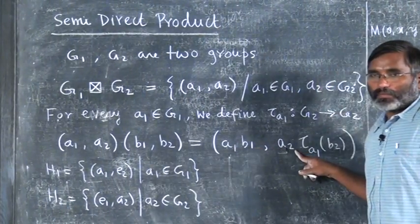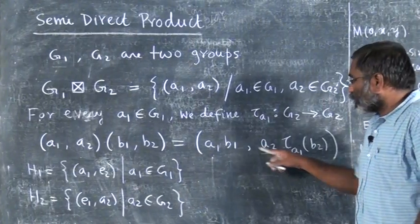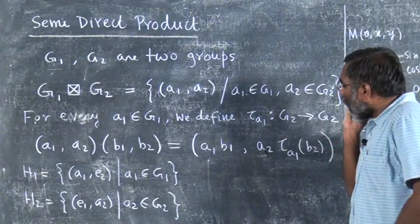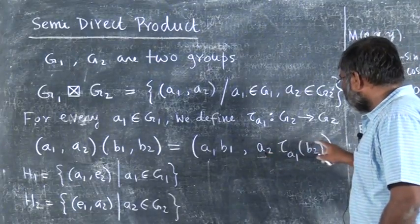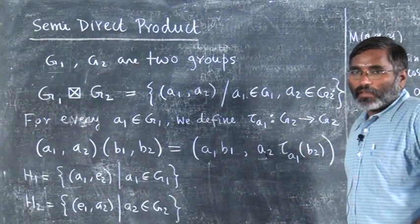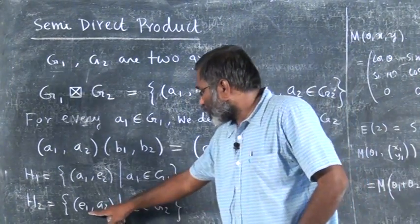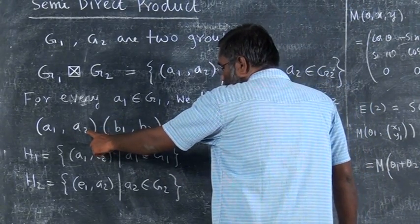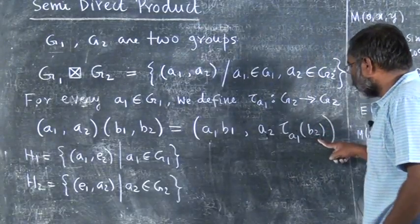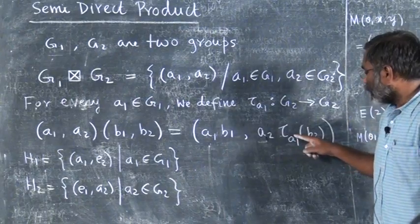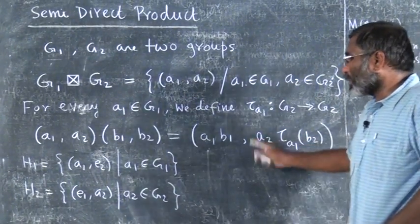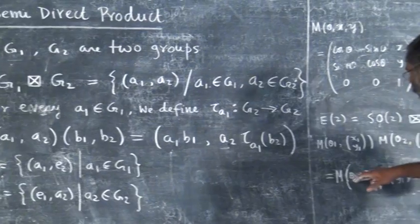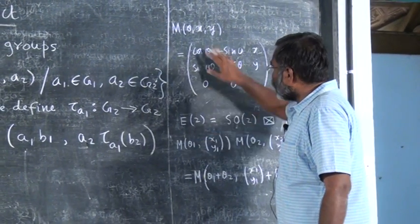So (e, a2) composed with (a1, e) gives (a1, a2). And (a1, e) composed with (b1, e): the second coordinate is e, and τ_{a1}(e) = e, so this also gives e. For (e1, a2) composed with (e1, b2), the result is (e, a2 · τ_{e1}(b2)). For example, if θ equals 0, the rotation is the identity automorphism.